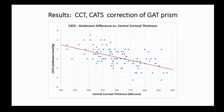We demonstrate a correction difference between the CATS and Goldman prisms, which measures a higher CATS IOP in thin corneas and a lower CATS IOP in thick corneas, which is what would be expected. Note the IOP pressure difference is approximately zero for a nominal cornea of 550 microns. We demonstrate similar IOP difference correlations correcting for corneal rigidity and corneal curvature.